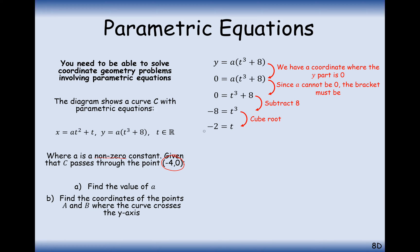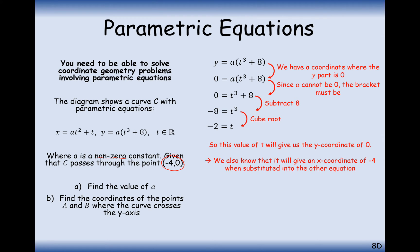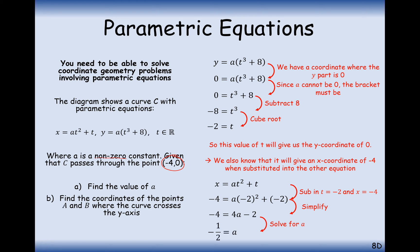The t value of minus 2 is where the curve intersects the x axis at minus 4. So we take the x equation and substitute in t equals minus 2. We also know the x coordinate is minus 4, so we can work out 'a'. Substituting in all those values and simplifying, we get a equals minus a half.